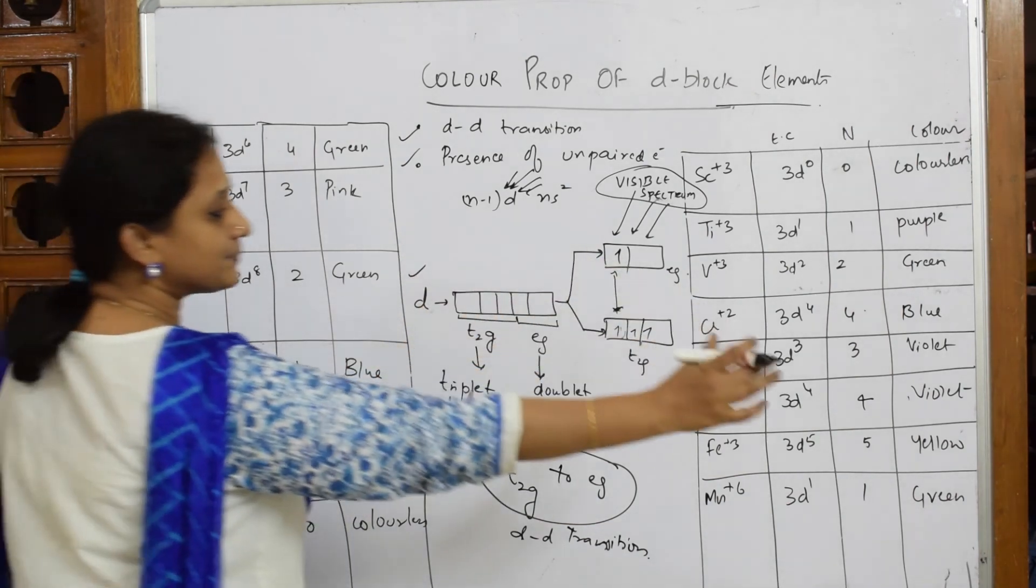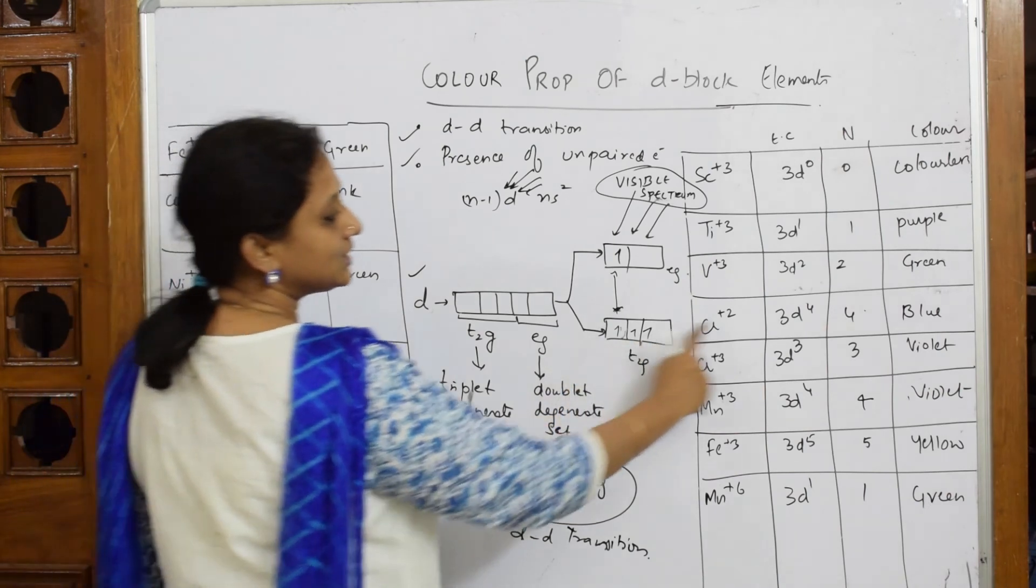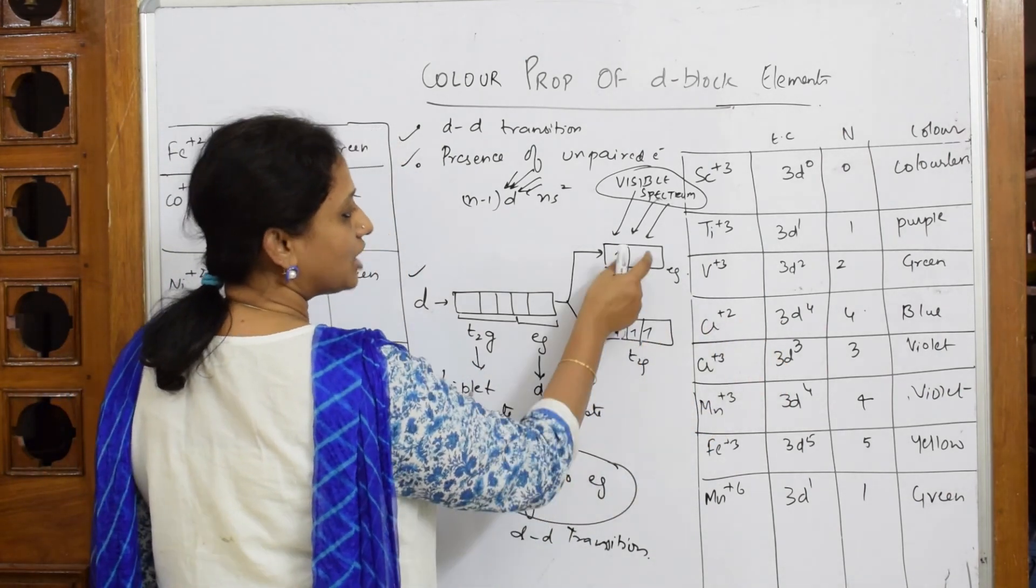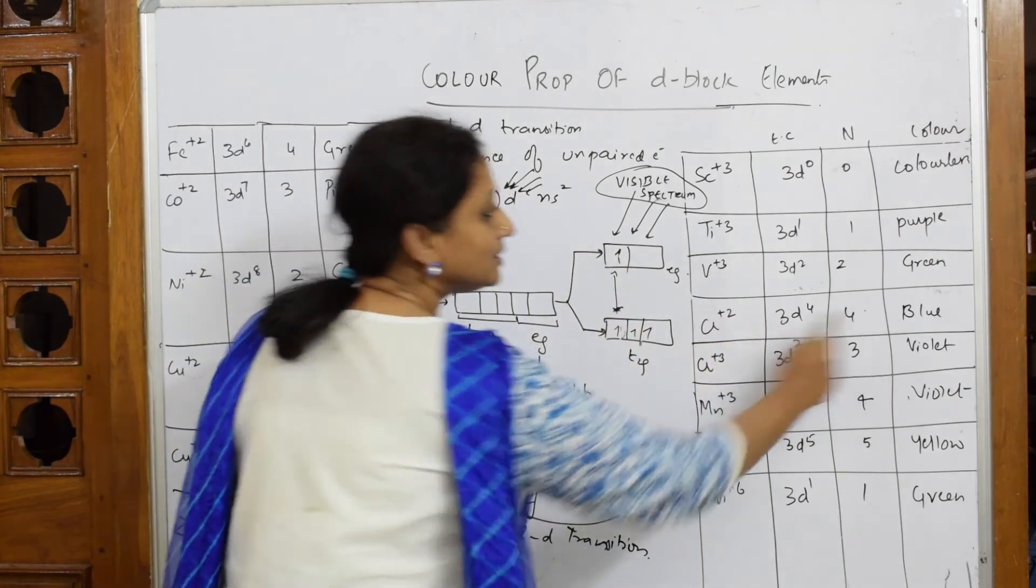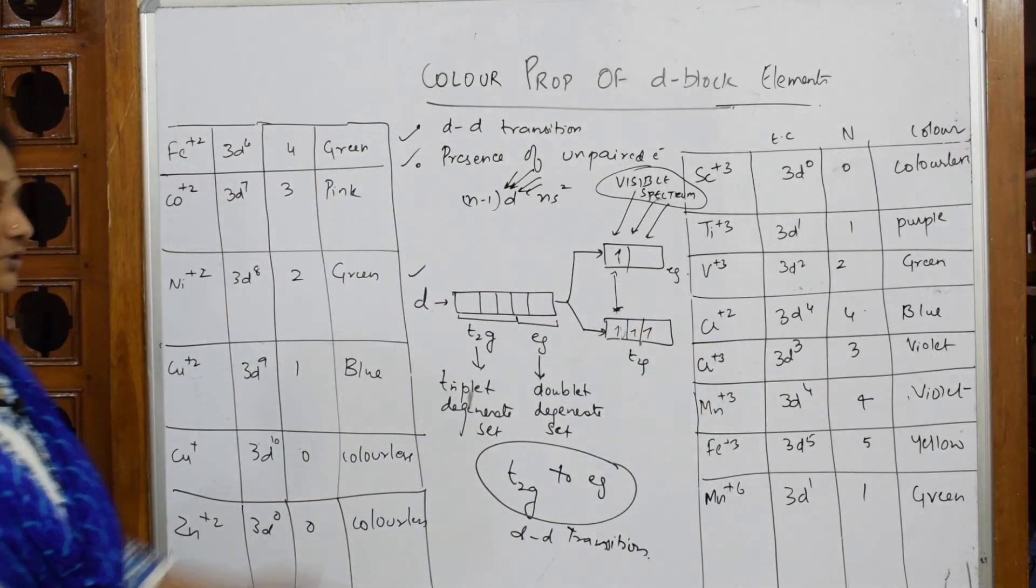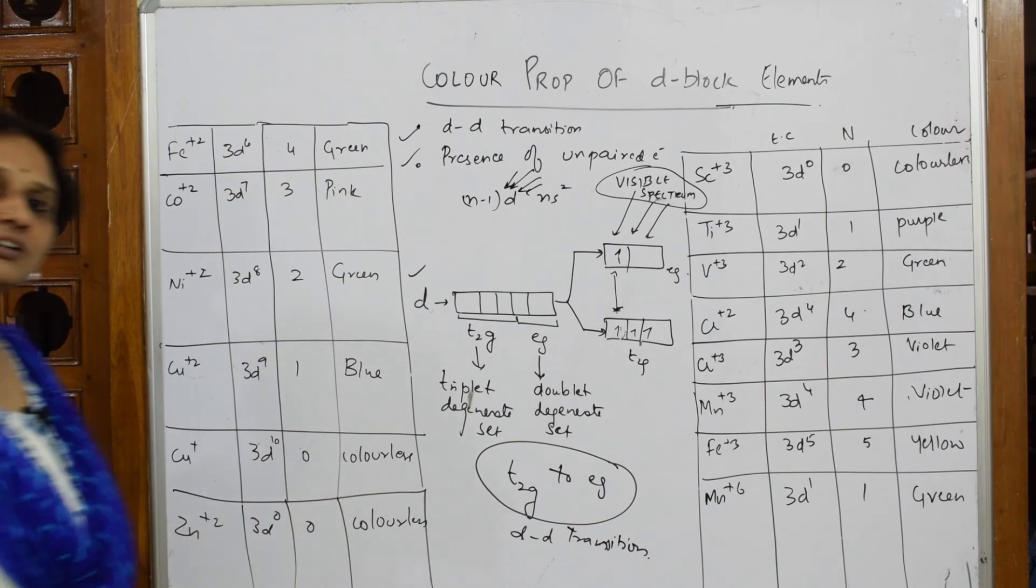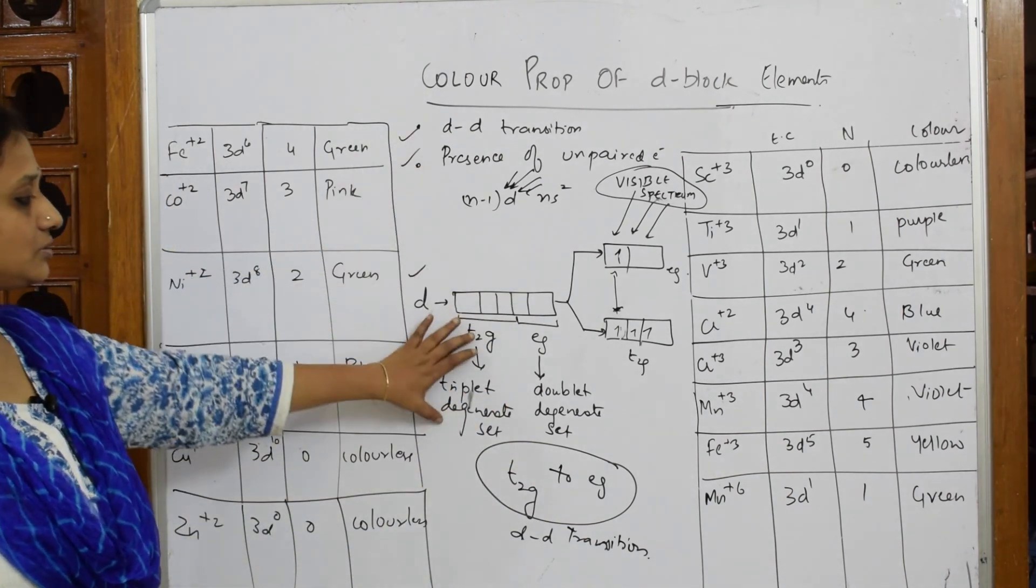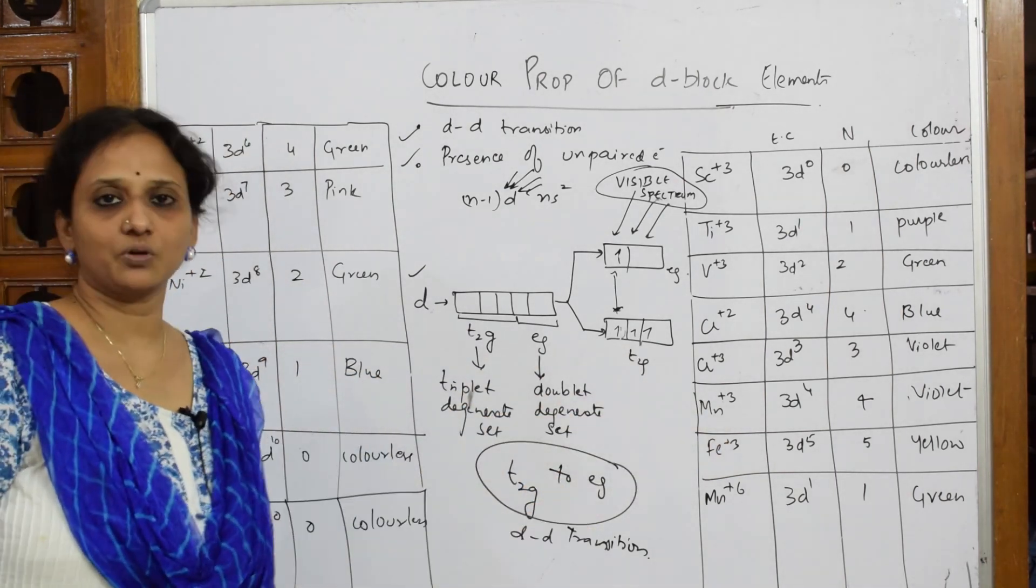You can start with this concept, show them what is t2g and eg. After that, whichever example is given, take that example, take the configuration, show how many unpaired electrons are there, see how many are going to the excited state, and write that particular color. This is your concept for color property - one, two, three, four, five, six - very important.